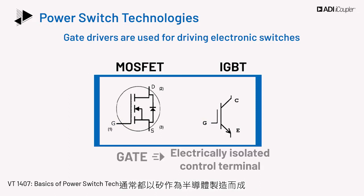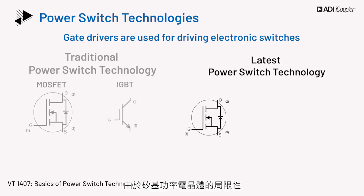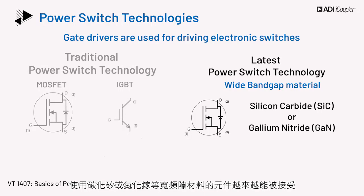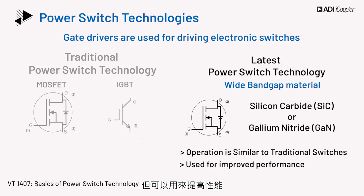Both these devices are conventionally fabricated with silicon as the semiconductor. Due to the limitations of silicon-based power transistors, devices using wide bandgap material such as silicon carbide or gallium nitride are finding increasing acceptance. These devices can be operated similar to traditional semiconductors but are used for improved performance.